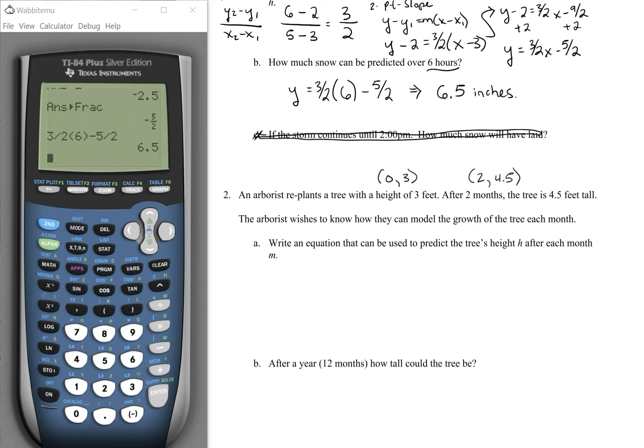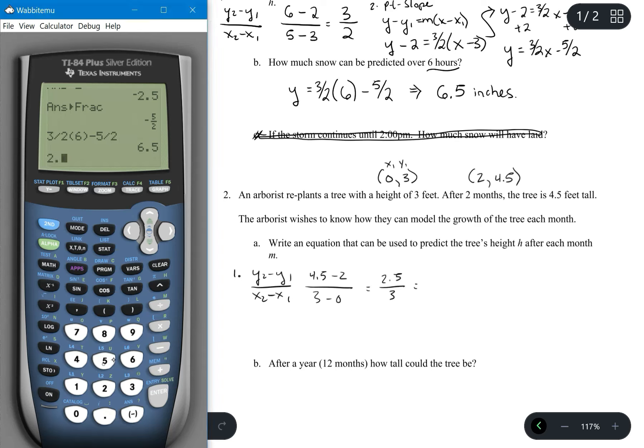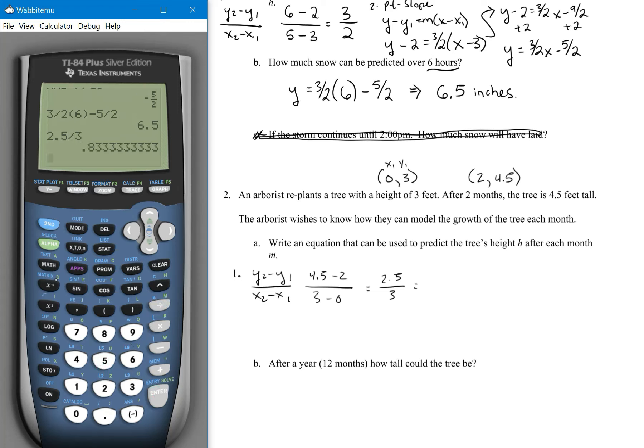We need to write an equation to predict the height. First, we need to find the slope. So y2 minus y1 over x2 minus x1. I'm going to use this as x1 and y1 and go from there. So we're looking at 4.5 minus 3 all over 2 minus 0. 4.5 minus 3 is 1.5 all over 2. And I'm going to find that as a decimal and then as a fraction. So we are looking at 5 sixths.